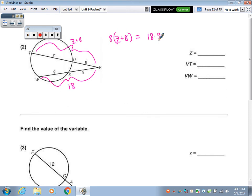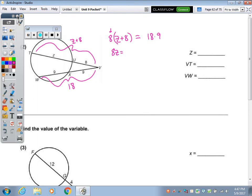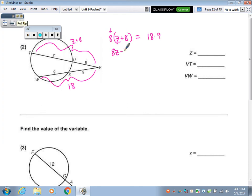Alright, I know I'm writing the 8 here in front, just because I want you to remember to do the distributive property there. So I'm writing it in the front. 8Z plus 64. 18 times 9, 162. Minus 64, 98, divide by 8, you get 12.25.